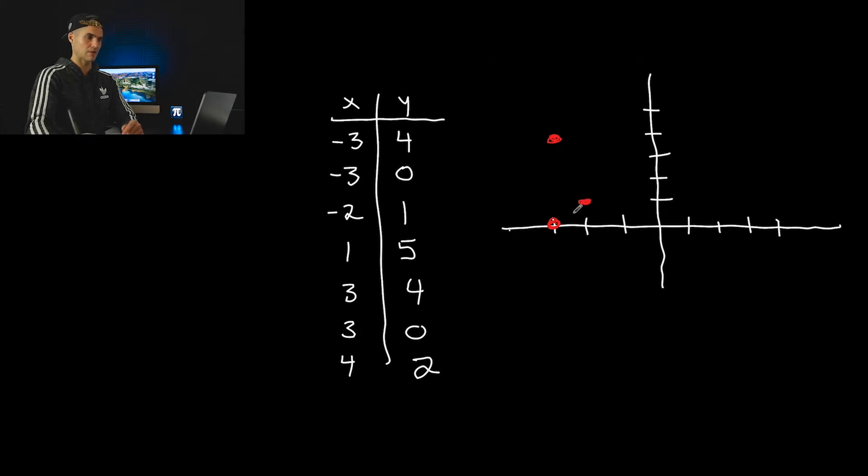So negative two and one, and then we got one and five. So that's going to be up here, three and four. That is right there. And then we got four and two down here. Okay, so domain. Well, with this table, again, it's nice. Now, all of the X values are in order. So negative three, negative two, we got one, three and four, like that.